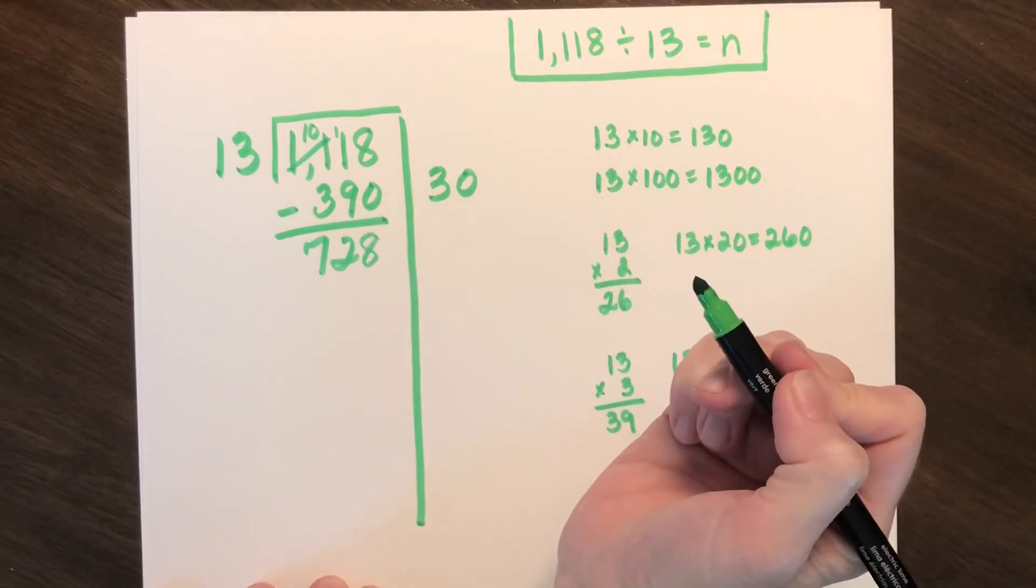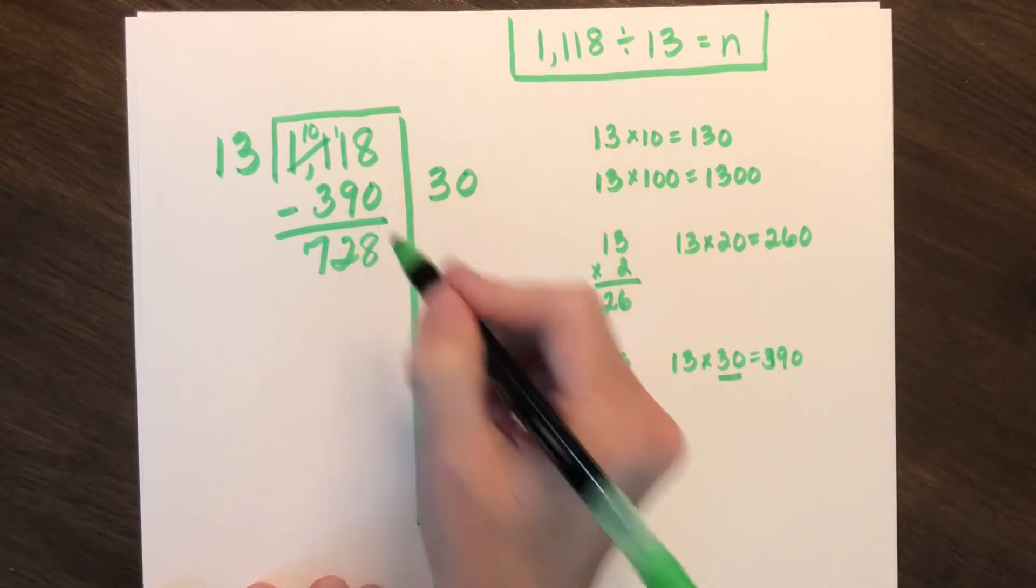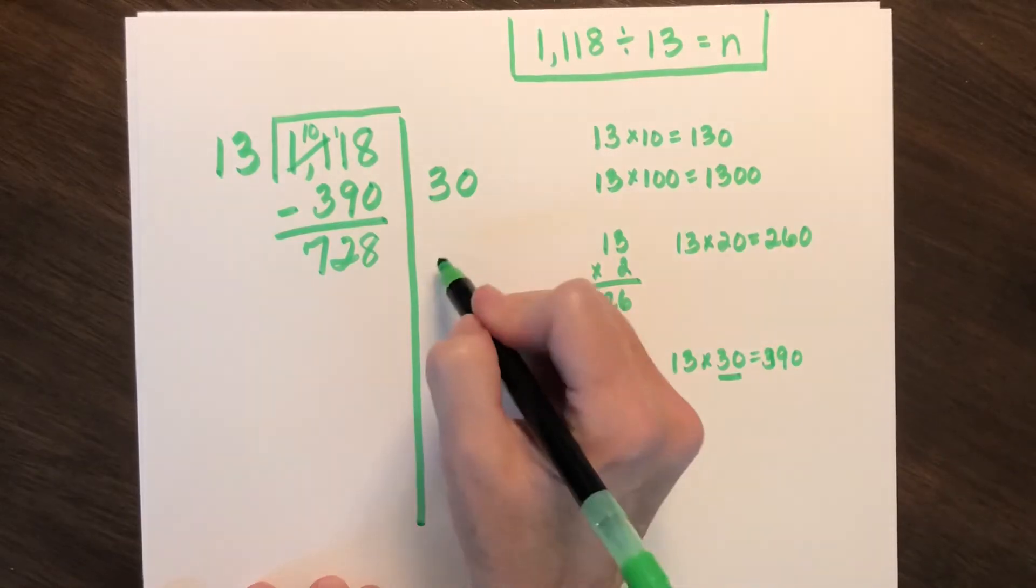And I have 728 left over. Can I do another group of 30? I sure can.